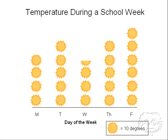So the temperature for Monday was 10, 20, 30, 40 because there's four suns. And we can't understand that unless we understand that the sun represents 10 degrees.